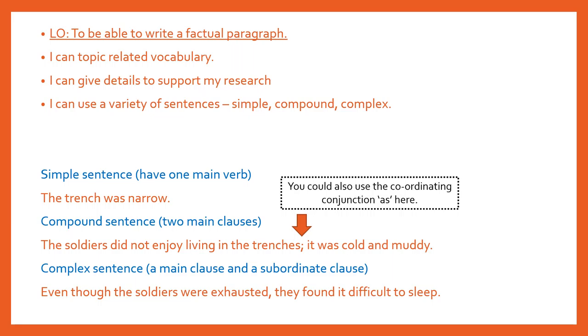Just in case you've forgotten, I've given you an example of all three. So a simple sentence has one main verb. For example, the trench was narrow — the main verb being 'was'.